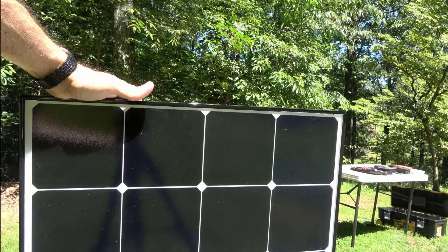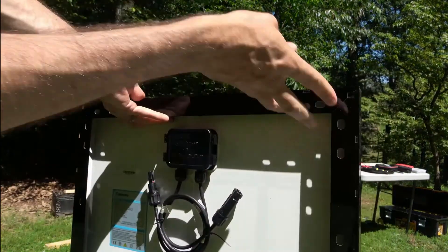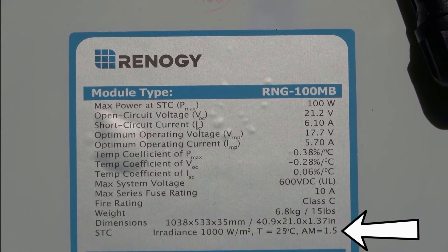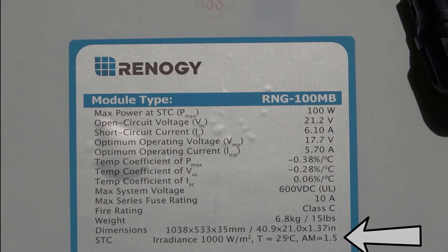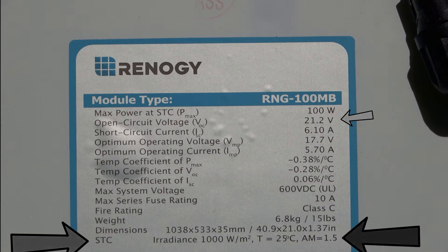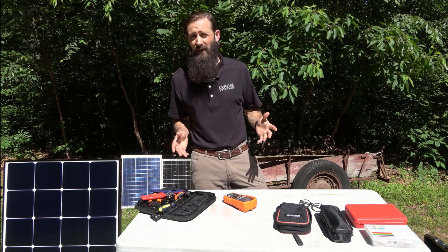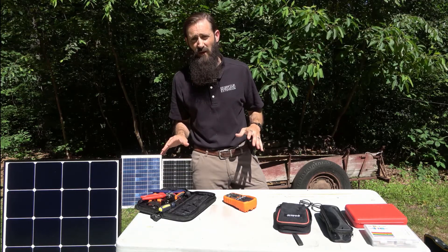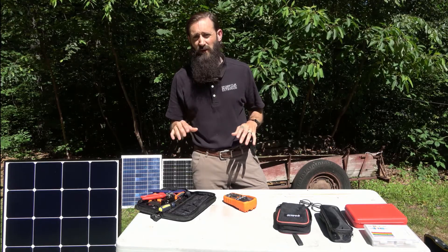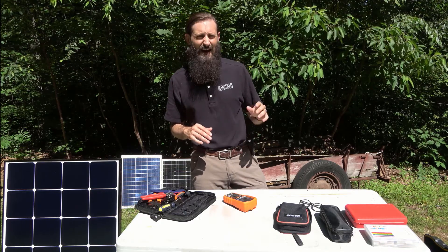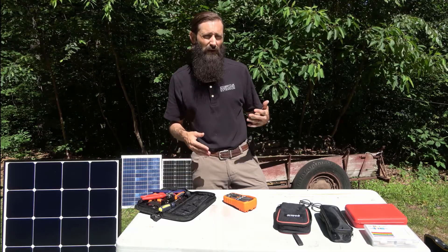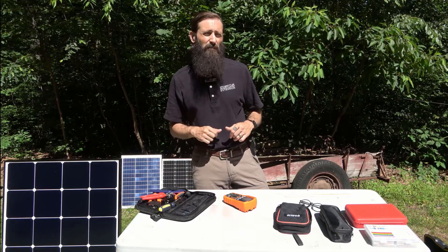Before we start, we'll take a look at the ratings for this solar module under Standard Test Conditions, or STC, by looking at the specification label on the back of the module. The STC conditions are 77 degrees Fahrenheit (25 degrees Celsius), 1,000 watts per square meter of irradiance, and an air mass of 1.5. Under STC, the module should read an open circuit voltage of 21.2 volts and a short circuit current of 6.1 amps. A significant reduction of 40–50% in voltage could indicate a problem such as a blown diode within the junction box.